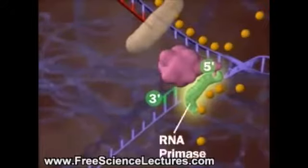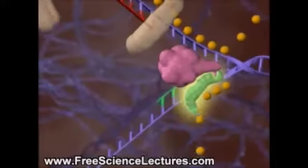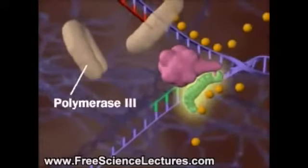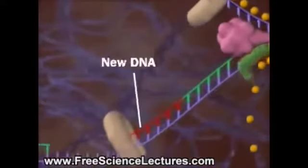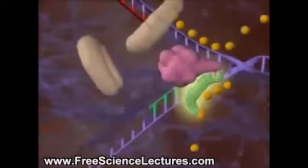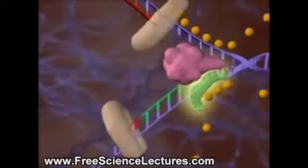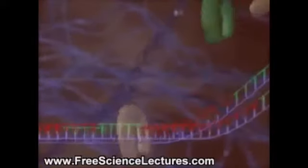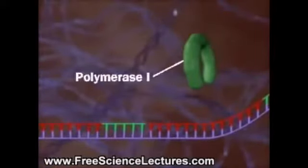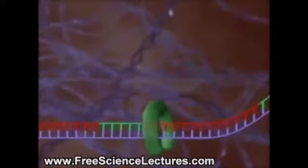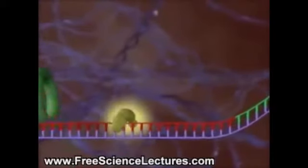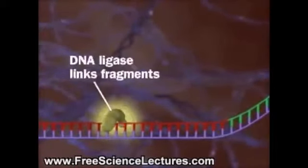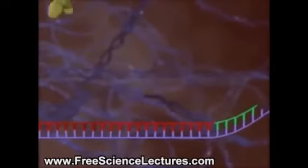First, an RNA primase lays down an RNA primer. Then, DNA polymerase 3 lays down new DNA. The process repeats again and again. DNA polymerase 1 replaces the RNA primers with DNA. Finally, DNA ligase links the Okazaki fragments.